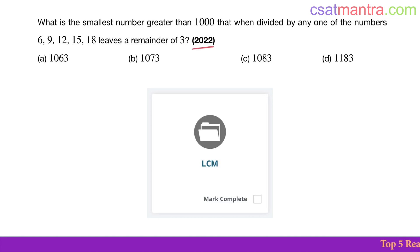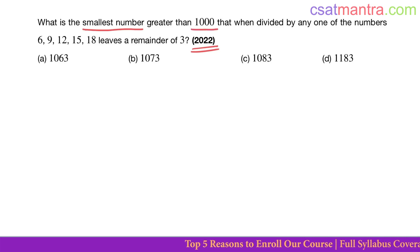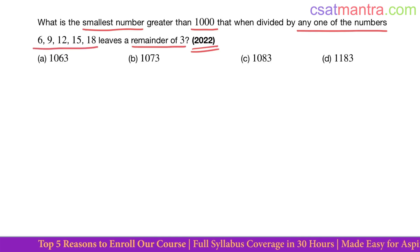This question is asked in 2022, based on LCM from number system. What is the smallest number greater than 1000 that when divided by any one of the numbers 6, 9, 12, 15, 18 leaves a remainder of 3?